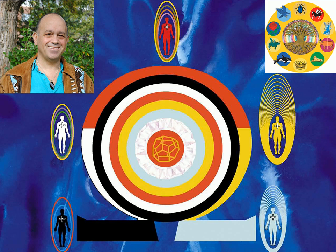The third step is to visualize yourself standing in the middle of each of the three sets of the eleven six-pointed stars, symbol number 4 and 4a.